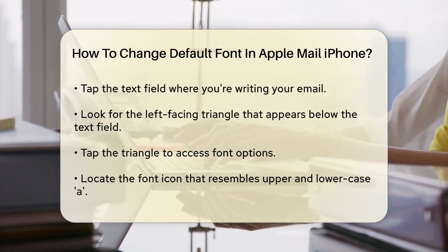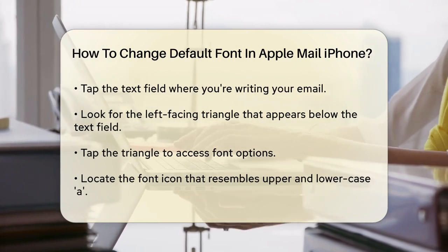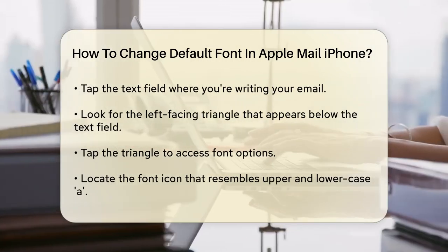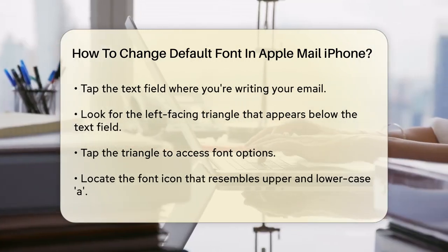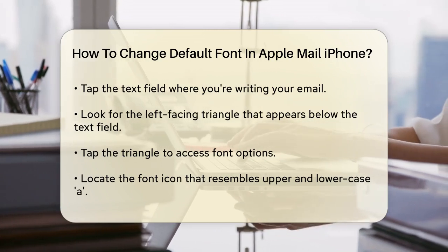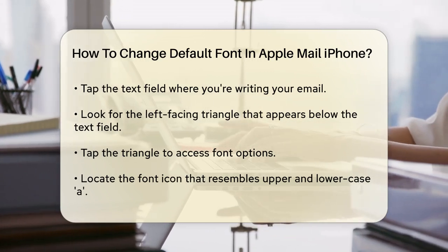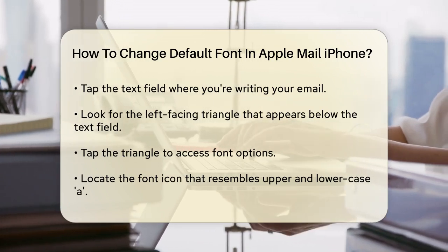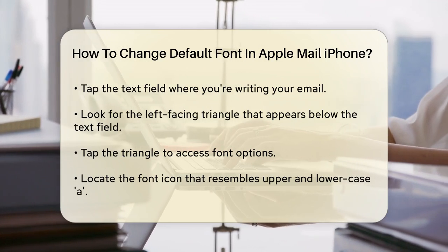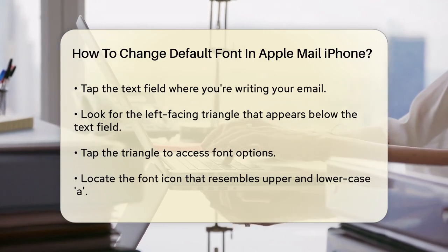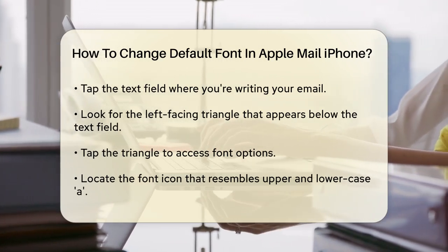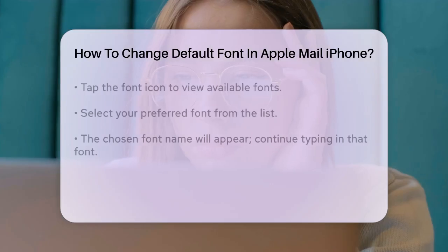Next, you'll see a font icon, which looks like an upper and lowercase letter A. Tap this font icon. Here, you might see the option labeled Default Font. Tap on this to view the list of available fonts. From this list, select the font you prefer.